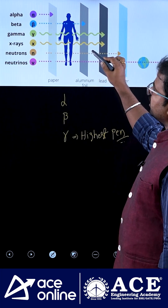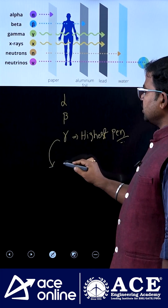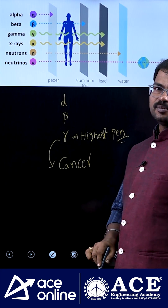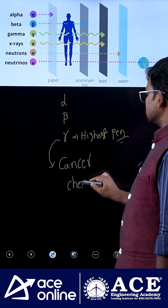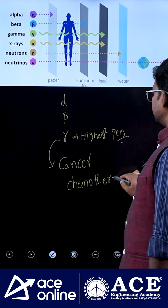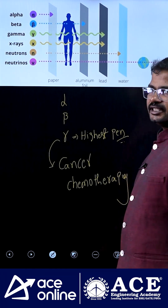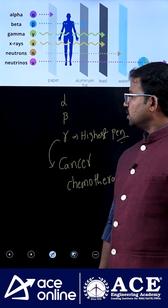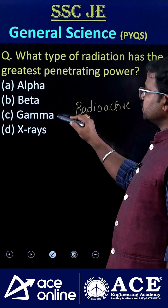You can observe that gamma rays are used in cancer treatment — specifically chemotherapy — to reduce the size of tumors. That's the practical application of gamma rays.